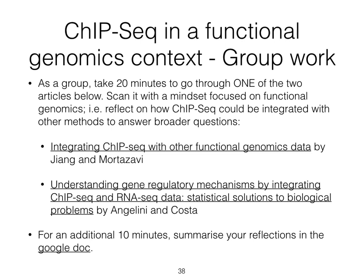This group work is an applied example of what the whole functional genomics course is about. It aims at building an overall understanding of how one can answer broad biological questions by connecting methodologies answering different questions. This is exactly the type of question you will have to answer during the final exam. As a group, take 20 minutes to go through one of the two listed publications. Scanning it and reflecting on what the authors suggest are possible integrations — then for an additional 10 minutes, summarize your reflection in the Google Doc.